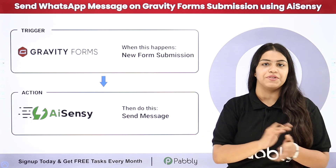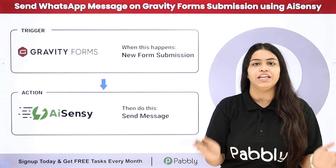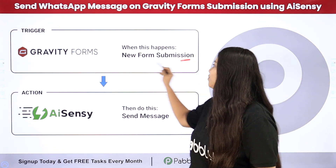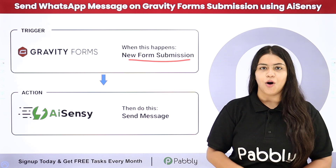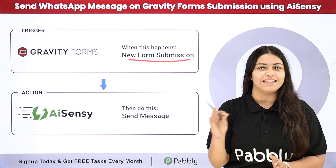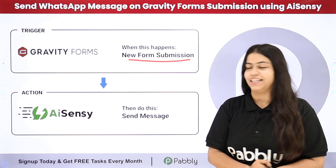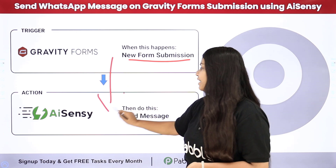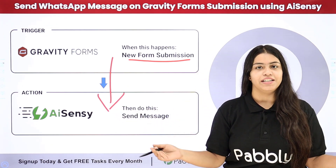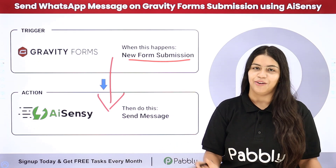I am running an EdTech company and we use Gravity Forms to get registrations for the events which we conduct regularly. What I want is that as soon as a new form submission is made in my Gravity Forms, an automated WhatsApp message should be sent to the participant who registered for the event. To do this we are going to create a connection between Gravity Forms and AISNC using Pabbly Connect — an amazing automation software.